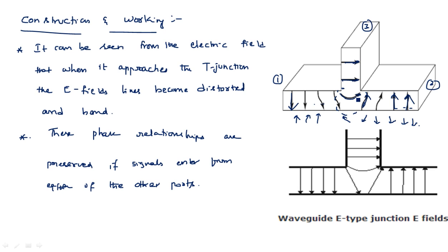To summarize: if port 1 and port 2 are given the same phase, when these two signals reach the junction they will cancel out — positive here and positive here results in cancellation. If different phases are given, they will add up and come out from port 3. In that way the phase relationship can be preserved using this E-plane T-junction. In the next video I will explain the scatter matrix of the E-plane T-junction.